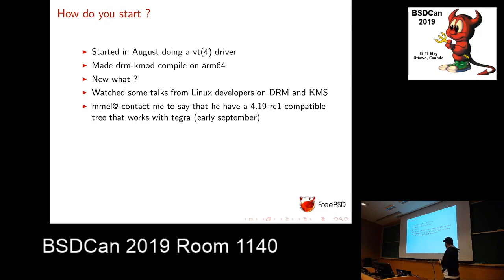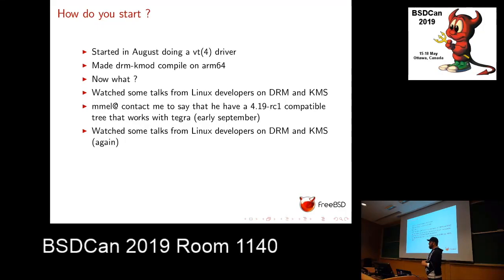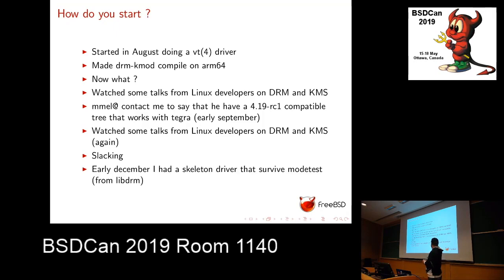I watched some talks from Linux developers on DRM and KMS, so I knew a little bit more about the API. In early September, Michal contacted me and said he had a more or less synced version with Linux 4.19 and that it was working with the Tegra DRM driver. He said he just needed a little modification and would publish the code. Then I watched more talks, and at the same time I read the Tegra DRM driver because it was BSD licensed so I could look at it. In early December, I managed to have a skeleton driver that passed modtest.